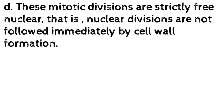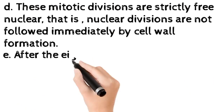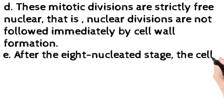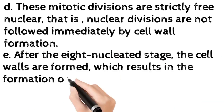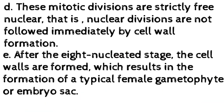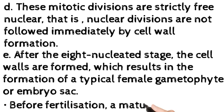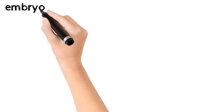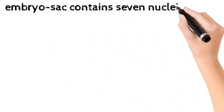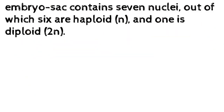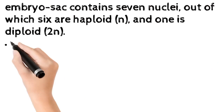Step D: These mitotic divisions are strictly free nuclear — that is, nuclear divisions are not followed immediately by cell wall formation. Step E: After the eight-nucleated stage, cell walls are formed, resulting in the formation of a typical female gametophyte or embryo sac. Before fertilization, a mature embryo sac contains seven cells, out of which six are haploid (n) and one is diploid (2n).